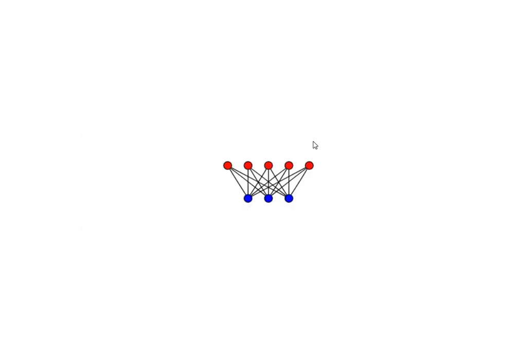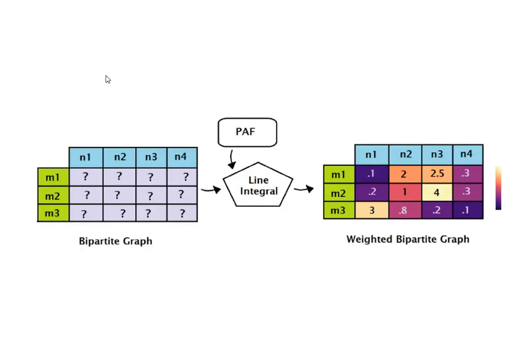After applying non-max suppression, we have different candidates for each body part — for example, 5 different points for the neck and 3 different points for the left shoulder. Graph theory helps us determine which pairs truly represent the correct connection. Using the PAFs, which give x- and y-direction for each pair, along with the candidates, we compute the line integral to find which connection has the highest value. We create a weighted bipartite graph to build a table, and by parsing that table we find which connection has the highest weight, indicating the strongest bond.